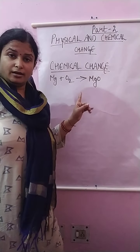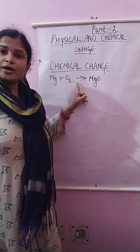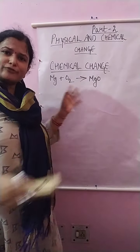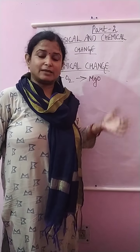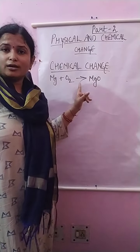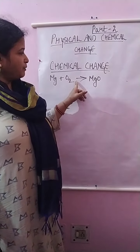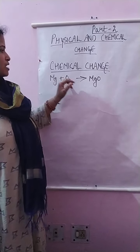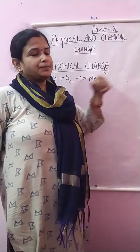Also children, in chemistry this arrow means 'becomes' — it is different from how you use it in mathematics. Here the meaning of the arrow is 'becomes': when magnesium reacts with oxygen, it becomes magnesium oxide.